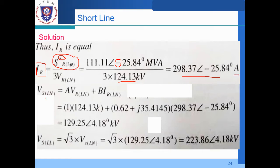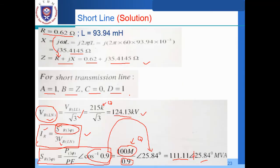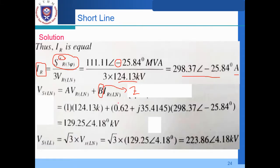Now for VSLN, using the two-port network equation: VS equals A·VRN plus B·IR. Since A equals 1 and B equals Z, where Z equals 0.62 plus j35.4145 ohms, we substitute the values of VRN and IR we calculated earlier into this equation.